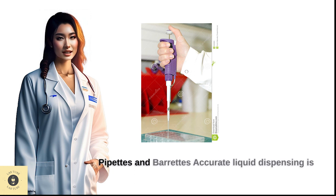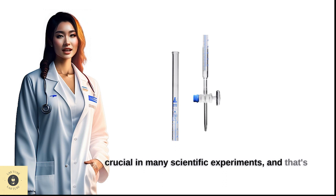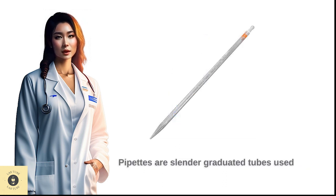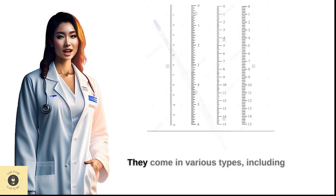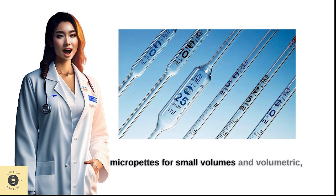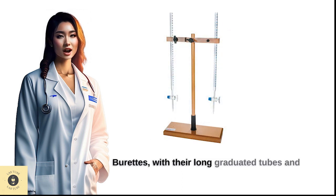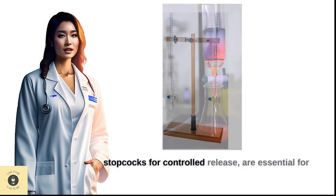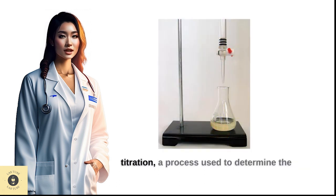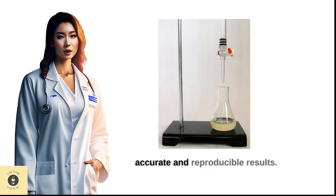Accurate liquid dispensing is crucial in many scientific experiments, and that's where pipettes and burettes come into play. Pipettes are slender, graduated tubes used to transfer precise volumes of liquid. They come in various types, including micropipettes for small volumes and volumetric pipettes for precise measurements. Burettes, with their long, graduated tubes and stopcocks for controlled release, are essential for titration, a process used to determine the concentration of a substance in a solution. These precision tools ensure accurate and reproducible results.